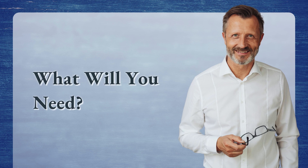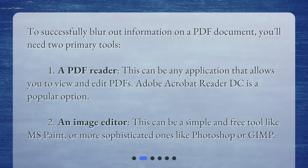What will you need? To successfully blur out information on a PDF document, you'll need two primary tools. First, a PDF Reader — this can be any application that allows you to view and edit PDFs; Adobe Acrobat Reader DC is a popular option. Second, an Image Editor — this can be a simple and free tool like MS Paint, or more sophisticated ones like Photoshop or GIMP.